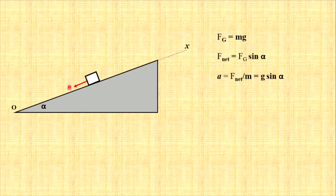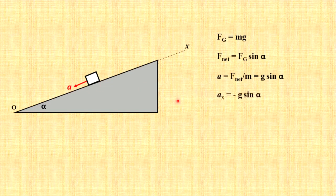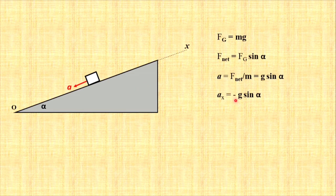Because acceleration points in negative direction, we need to find x component of acceleration, which in our case is negative g sine alpha.